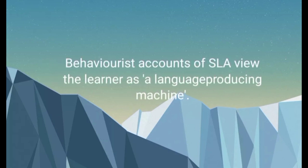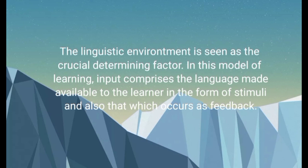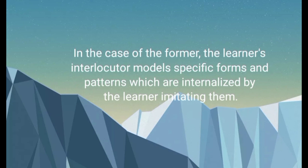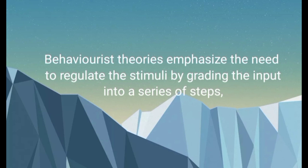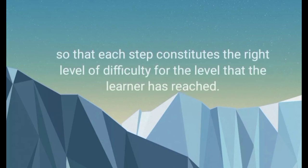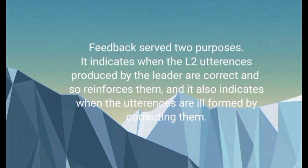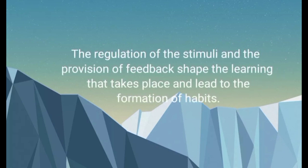Behaviorist accounts of SLA view the learner as a language-producing machine, and the linguistic environment is seen as the crucial determining factor. In this model, input comprises the language made available to the learner in the form of stimuli and also feedback. The learner's interlocutor models specific forms and patterns which are internalized through imitation. Behaviorist theories emphasize regulating the stimuli by grading input into a series of steps so that each step constitutes the right level of difficulty. Feedback serves two purposes: it reinforces correct utterances and corrects ill-formed ones. The regulation of stimuli and provision of feedback shape learning and lead to the formation of habits.